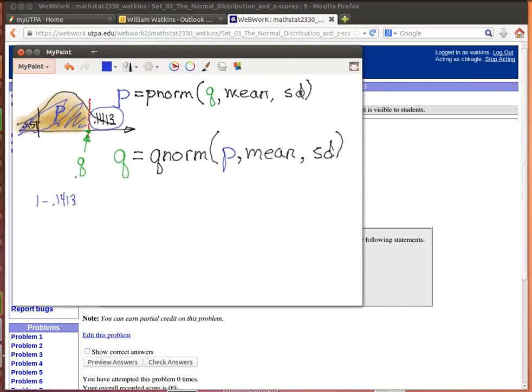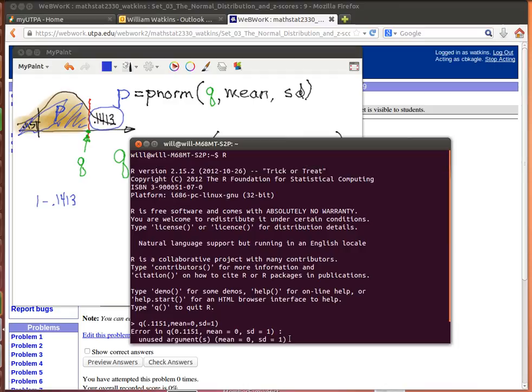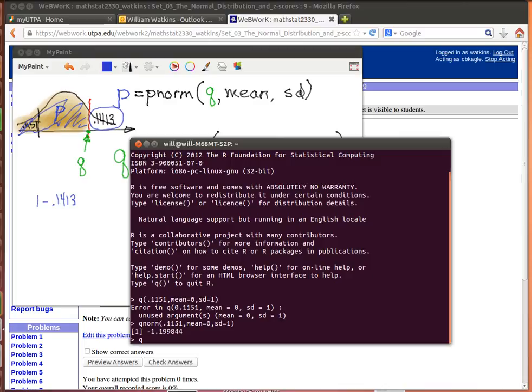Okay, so that's going to allow me to use my R to help do this job. I'm going to need to find the QNORM of 1 minus .1413. Now, I could have done that subtraction and just written that number in as .8587 or something like that. But I'm just going to ask R to go ahead and do that. And remember, it's going to be in a mean of 0 and a standard deviation of 1.